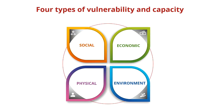There are four types of vulnerability and capacity: social, economic, physical, and environmental. Social vulnerability refers to the potential negative effects on a community caused by external stresses on human health, disruptions in services, or damage to the built environment. Some populations may be more susceptible due to factors such as age, income, education level, and other socioeconomic factors. A great example of social vulnerability is access to healthcare between low-income and high-income communities, while a great example of social capacity is education — if people are educated and aware of disaster risk, they will be better prepared.